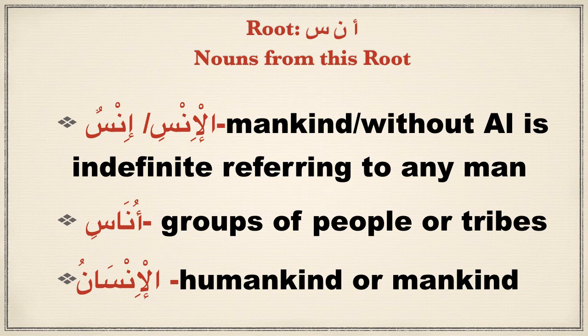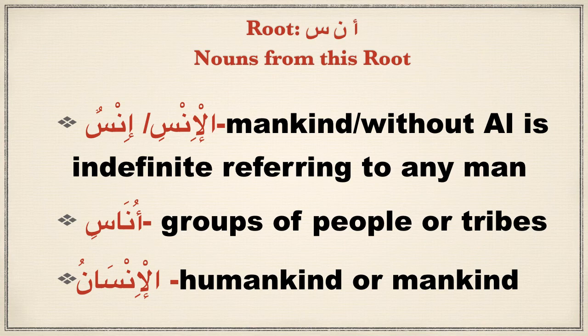Now let's look at the nouns from this root. Ins means mankind, as opposed to other species such as jinn. Without the al attached to this word, the meaning is indefinite, referring to any man. Unas is plural and used in the Quran to refer to groups of people or tribes. Al-insan is humankind. Some say the root of this word is nasiya, which means to forget because humans tend to forget, but that is not as commonly used as a root. It is more common to understand the root from anisa, as it relates to being social, friendly, and seeking intimacy as humans normally do.